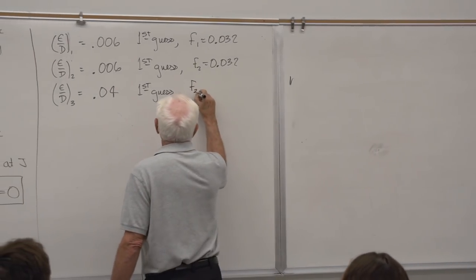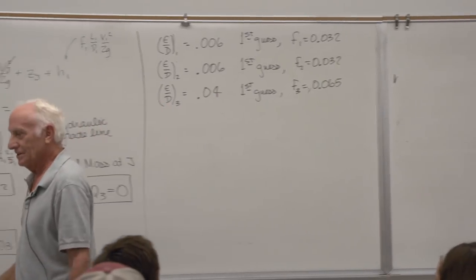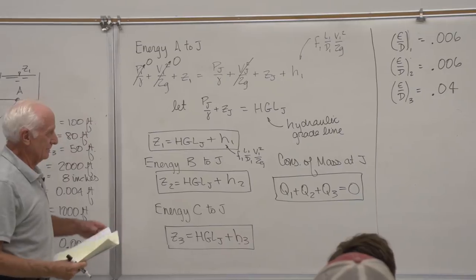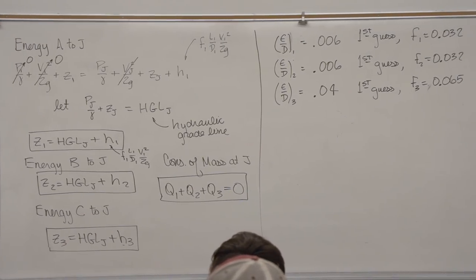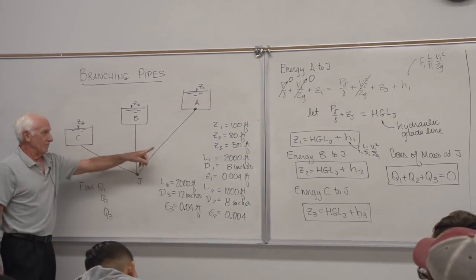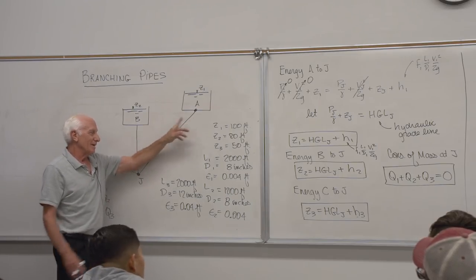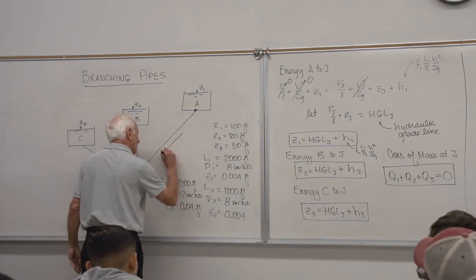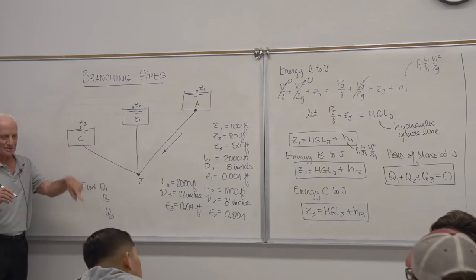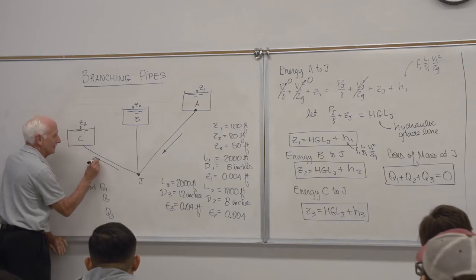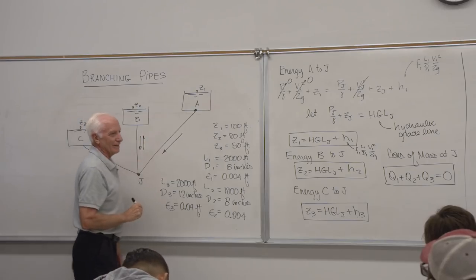With those F guesses in hand, I need to solve the four remaining equations. I know which way the flow goes in two pipes: reservoir 1 is the highest so flow definitely goes down pipe 1 to J, and reservoir 3 is the lowest so flow always goes from J down to reservoir 3. The uncertain one is pipe 2 — I don't know its flow direction yet.